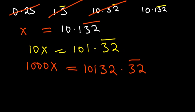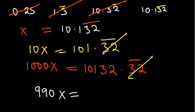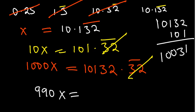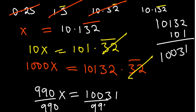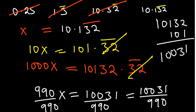Now we can subtract: 1000x minus 10x gives 990x. On the right, 10132.32 recurring minus 101.32 recurring — recurring parts cancel. We compute 10132 minus 101 = 10031. So 990x = 10031, giving the fraction 10031 over 990. Verifying on the calculator: 10031 ÷ 990 = 10.132323232..., confirming the answer.